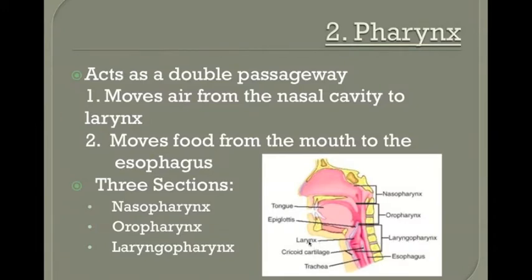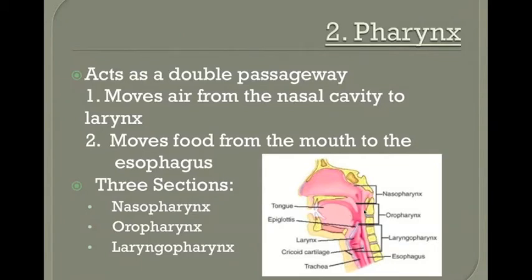The laryngopharynx is just above an area called the larynx, where our voice box is. This is the front passageway that contains air going to the lungs. Air goes through the mouth or nose, enters the pharynx, and then diverts anteriorly down from the larynx into the trachea to the lungs. Since we're in the digestive system, food follows a different path — from the mouth to the oropharynx, then to the laryngopharynx, and then into the esophagus.